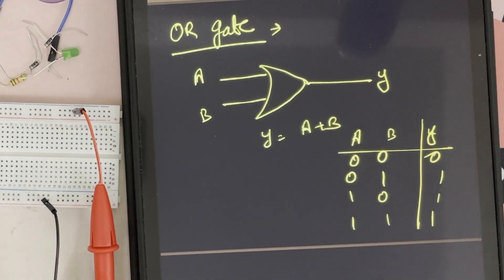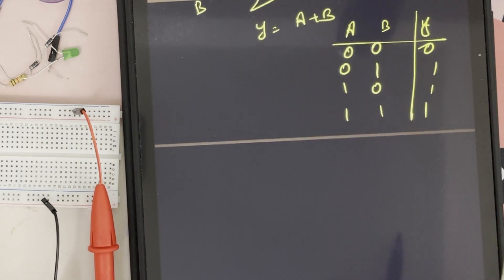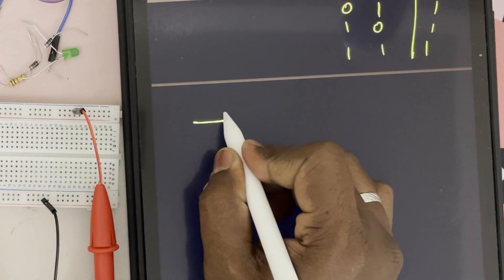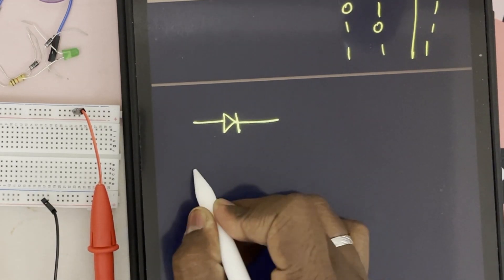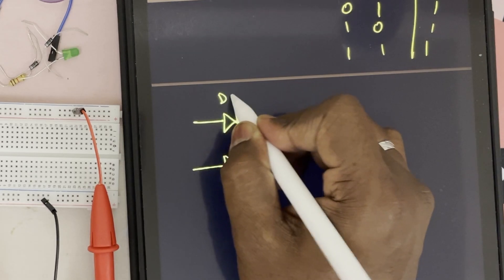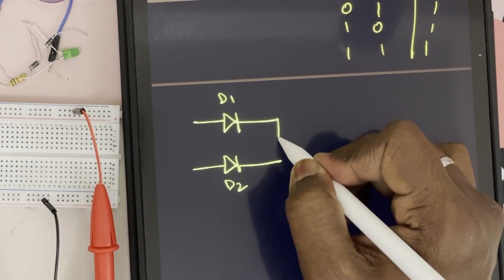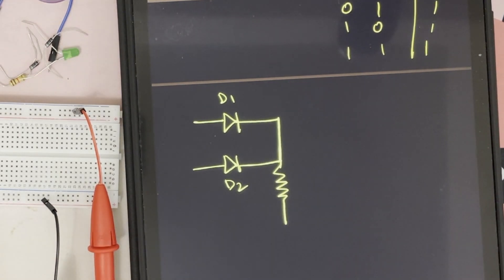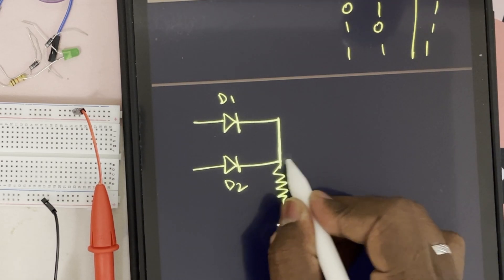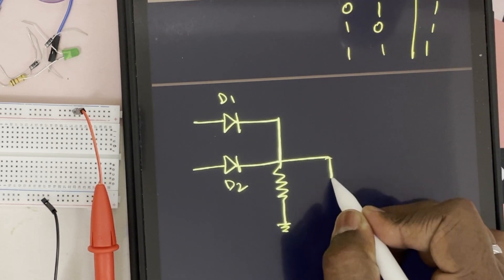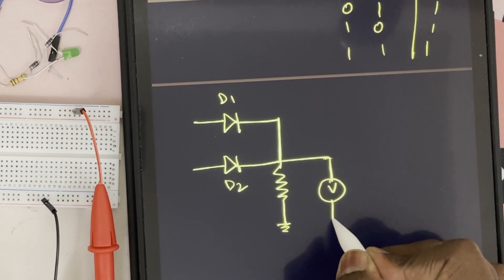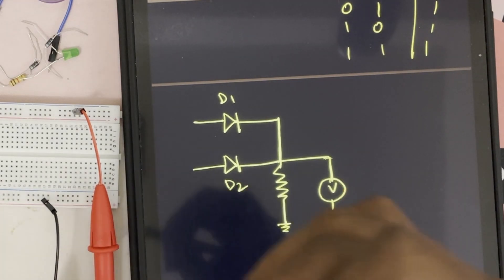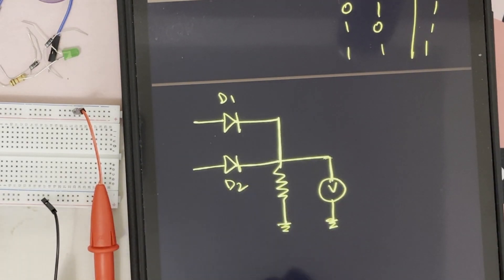Now I need to draw the circuit diagram. For the circuit diagram of an OR gate using diodes, I need two diodes — D1 and D2. These two will be connected with a resistance. If I connect a voltmeter here, this voltmeter will show us the output voltage. I can do this with a voltmeter or with an LED.